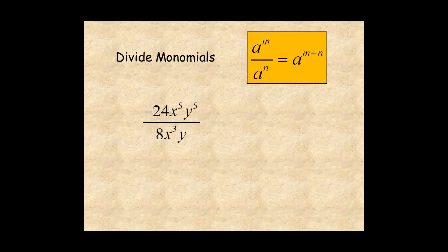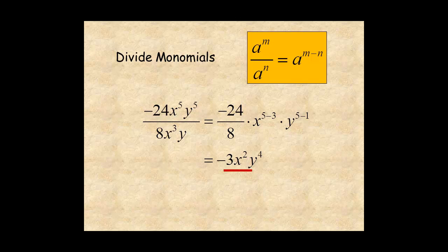For this example, begin by dividing the constants, negative 24 over 8. Then divide the x variables, x to the power of 5 minus 3, and the y variables, y to the power of 5 minus 1. The simplified expression is negative 3, x to the power of 2, y to the power of 4.